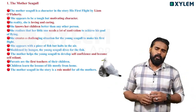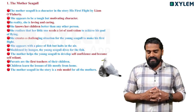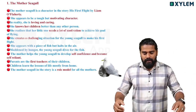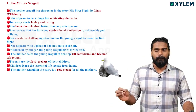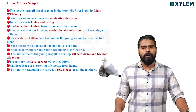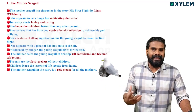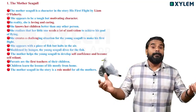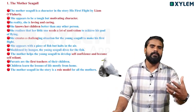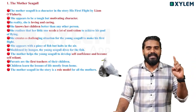Maddened by hunger, the young seagull dives for the fish. The mother helps the young seagull to develop self-confidence and become self-reliant. Parents are the first teachers of their children — children learn the first lessons of life mostly from home. Mother Seagull in the story is a role model for all mothers. These are the essential points; write them in a proper format to get full marks.